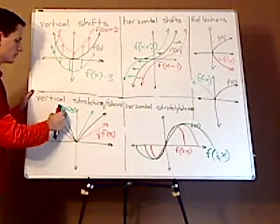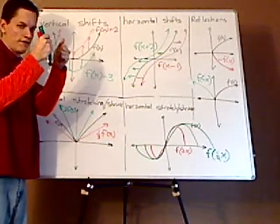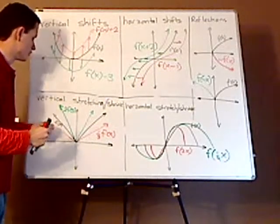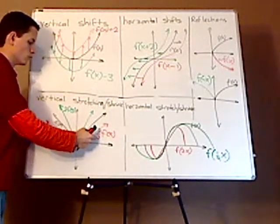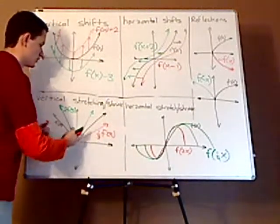Here, if you have a 2 on the outside, it's making it skinnier. It's increasing a lot faster than the original function. If it's one-third, slowly, so it's going to be wider.